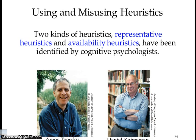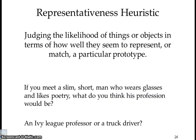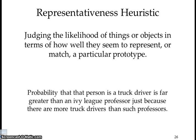There are two kinds of heuristics: representative and availability. The representative heuristic involves judging the likelihood of things in terms of how well they match a particular prototype. For example, if you meet a slim, short man who wears glasses and likes poetry, you might say he's an Ivy League professor. But there's actually a greater probability he's a truck driver, simply because there are more truck drivers than Ivy League professors. That's the representative heuristic at work.